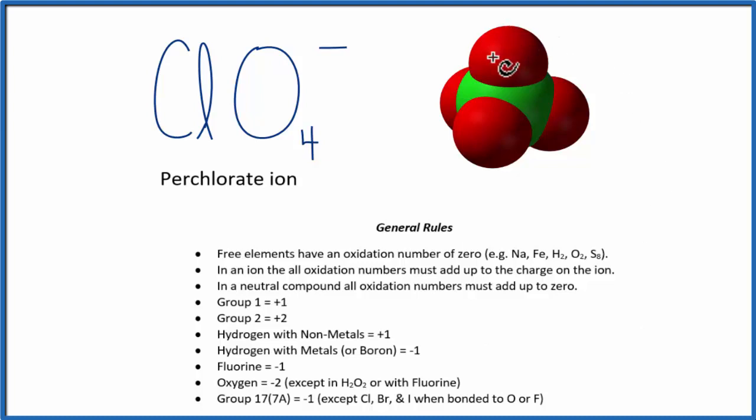So the red here, those are the oxygens, and the green is the chlorine. I look down the rules here and see that oxygen is almost always minus 2, with a few exceptions. So we can put minus 2 as our oxidation number for each of these oxygens here.